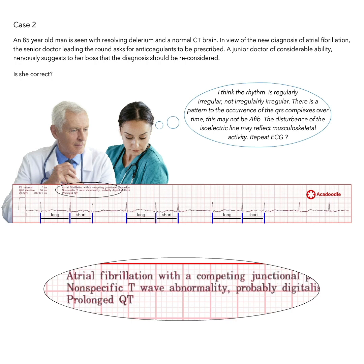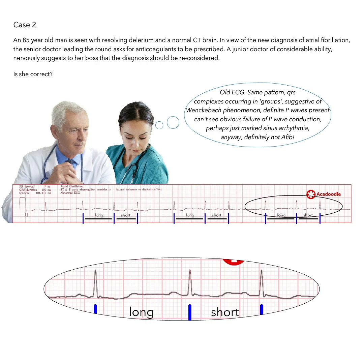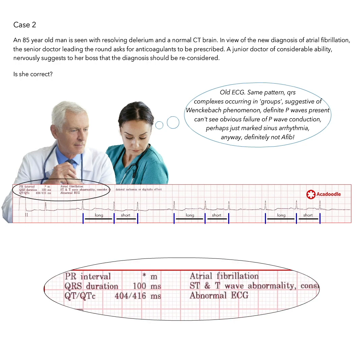In fact, on review, the same regularly irregular occurrence of QRS complexes was present on previous ECGs, with obvious P-waves present. Note that even in the presence of obvious P-waves, the computer interpretation is still incorrectly calling this rhythm atrial fibrillation.